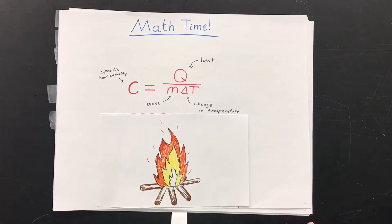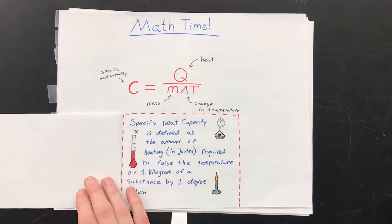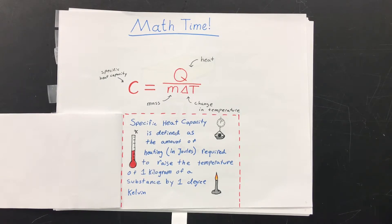So if you prefer to take a more quantitative perspective, we can define a material's specific heat capacity as the amount of heat, which we measure in joules, required to raise one kilogram of the material by one degree Kelvin.